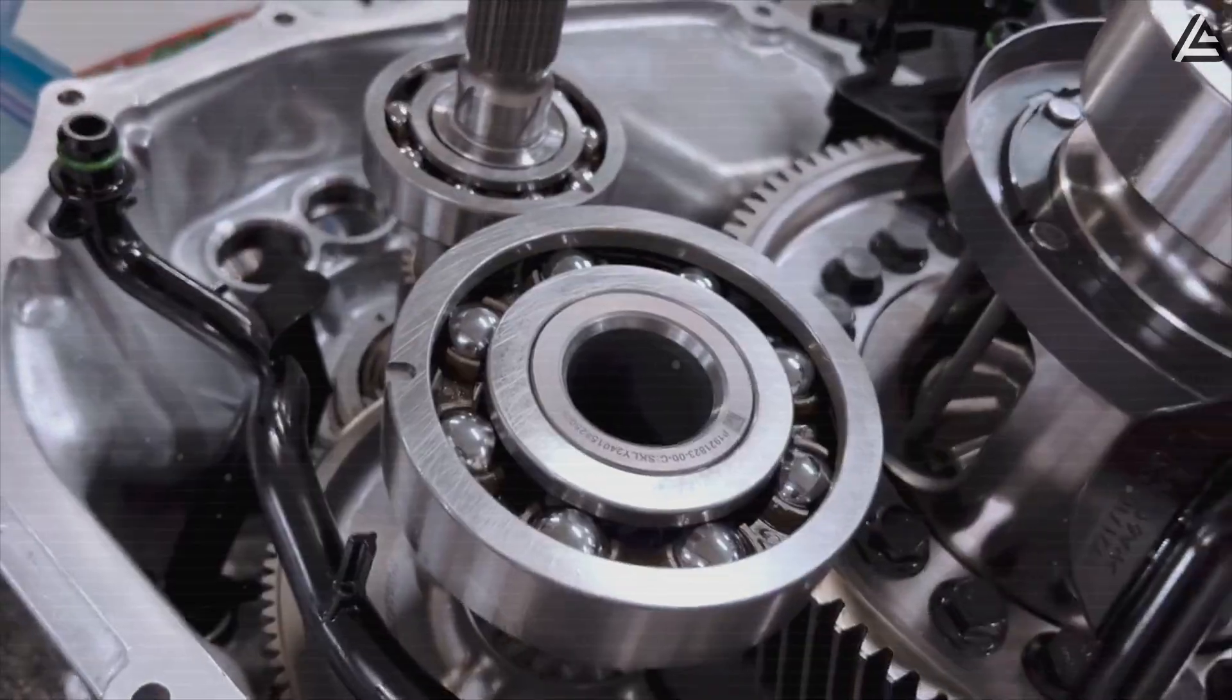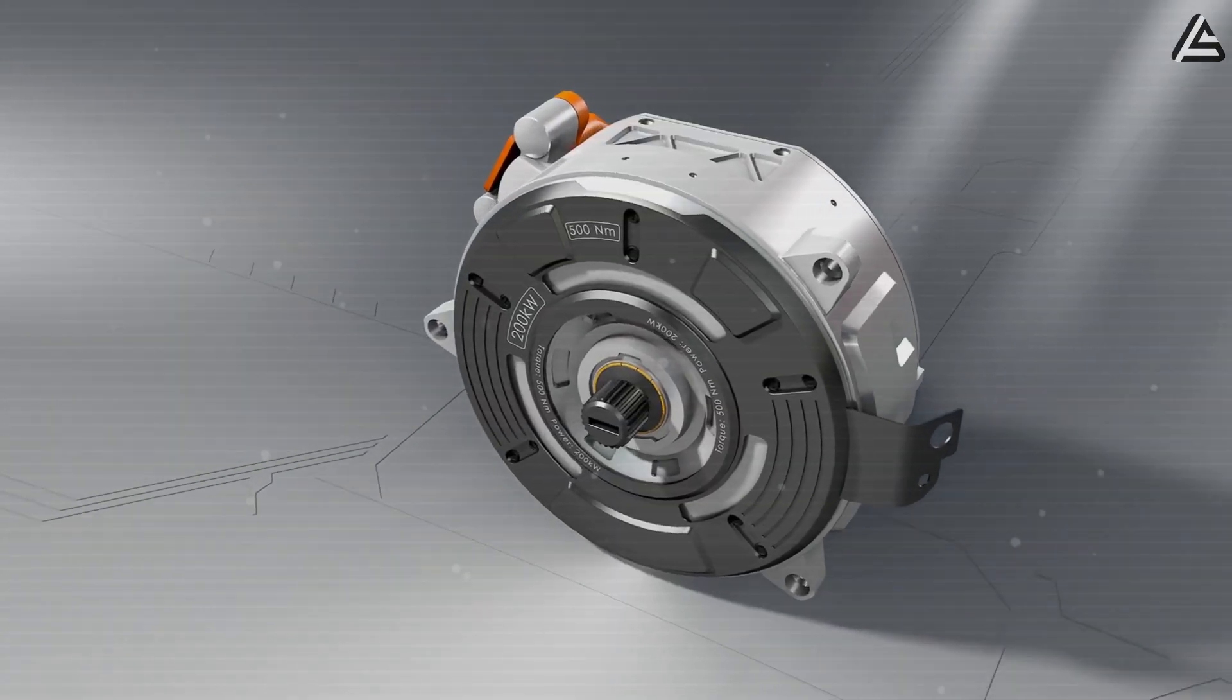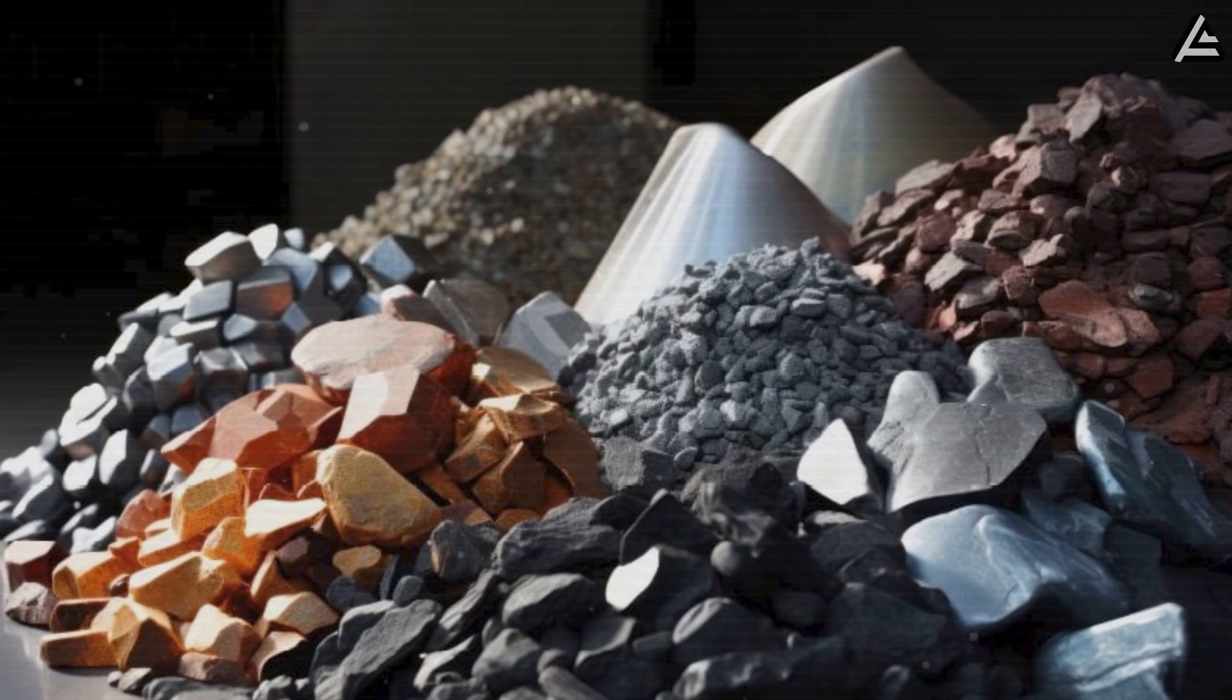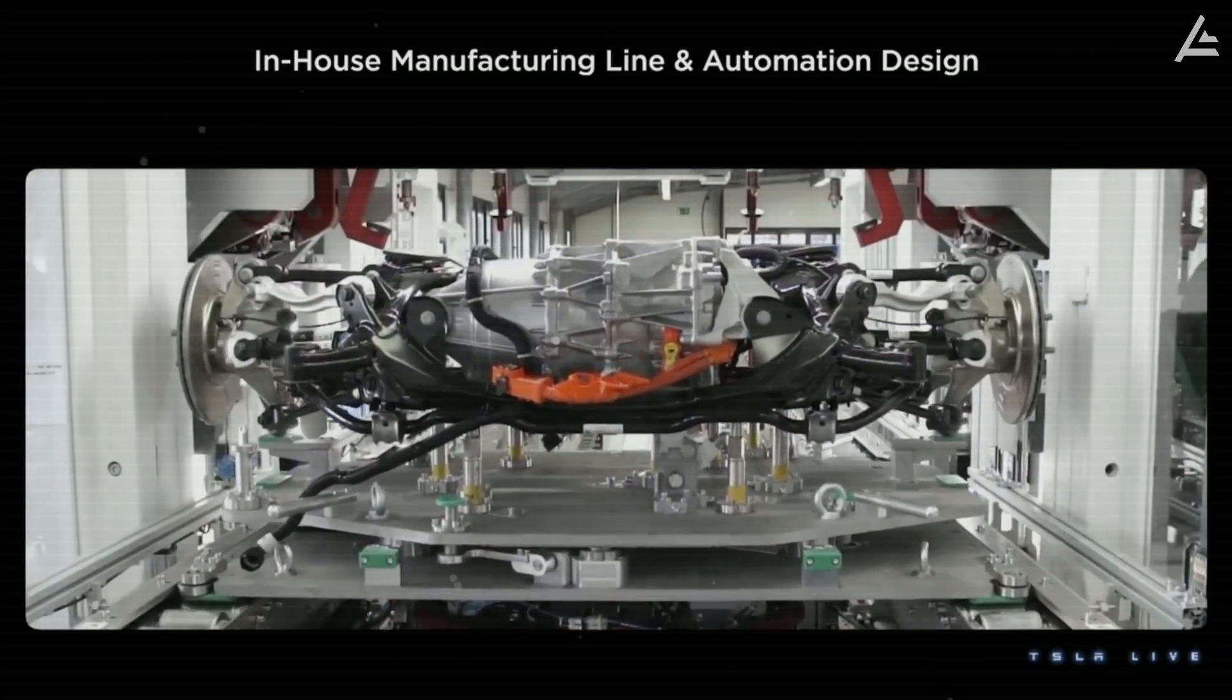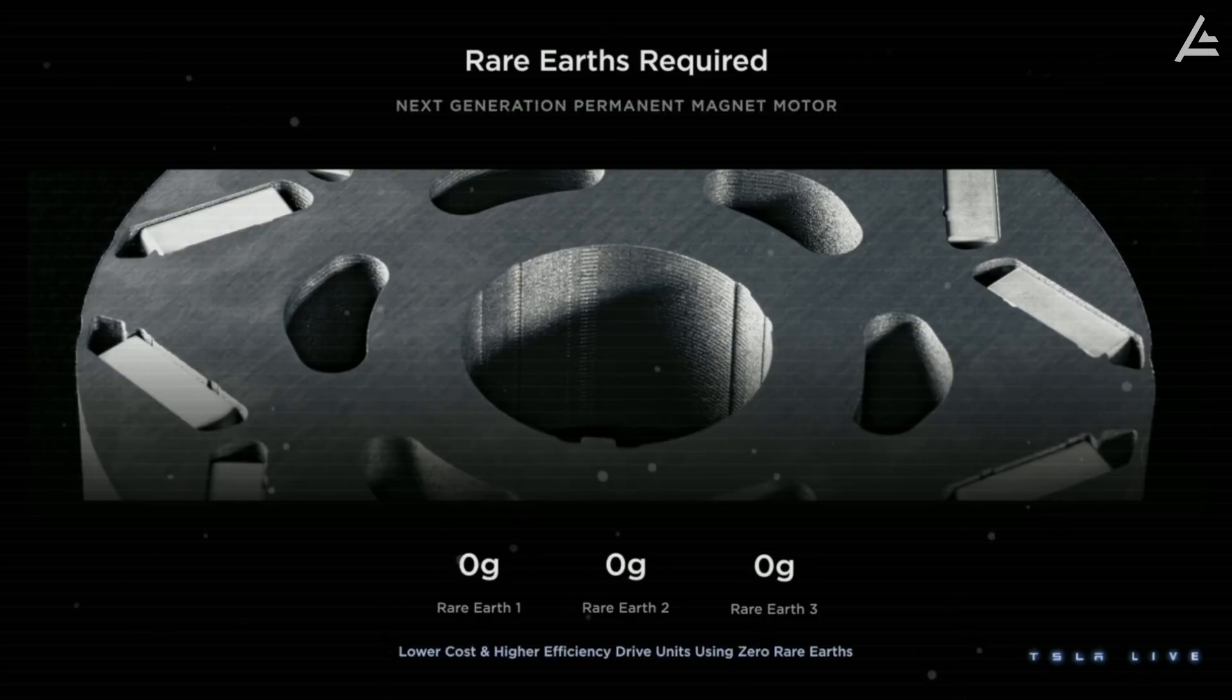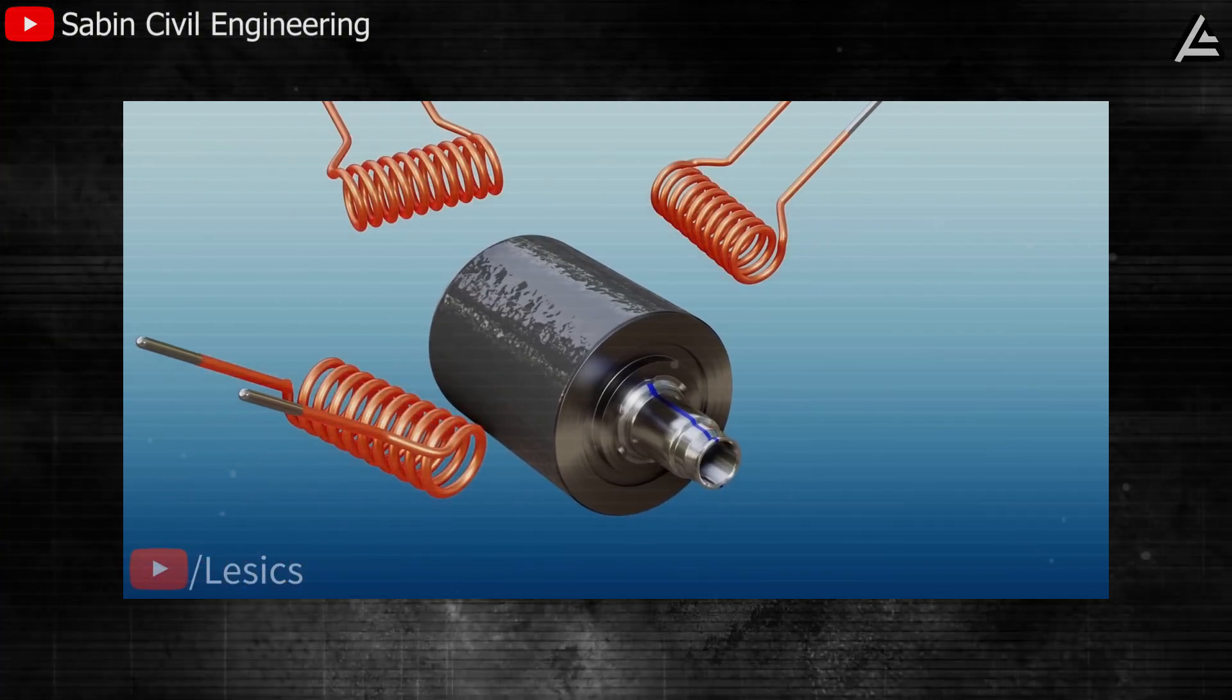Unlike traditional permanent magnet motors that depend heavily on rare earth materials like neodymium and dysprosium, Tesla's new rotor architecture cuts rare earth use by an estimated 60 to 75 percent, dropping material costs by roughly $400 to $600 per vehicle. By replacing heavy steel and rare earth structures with a carbon fiber overwrap, the motor achieves higher tensile strength while maintaining tight tolerances at high RPMs.